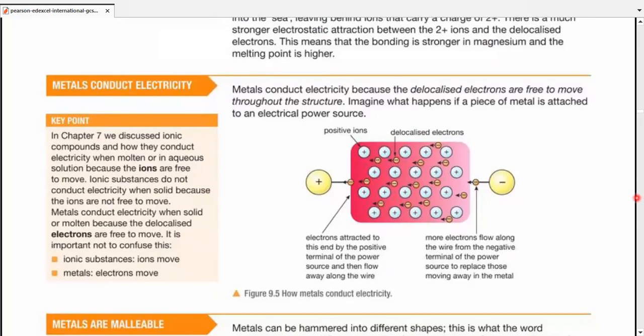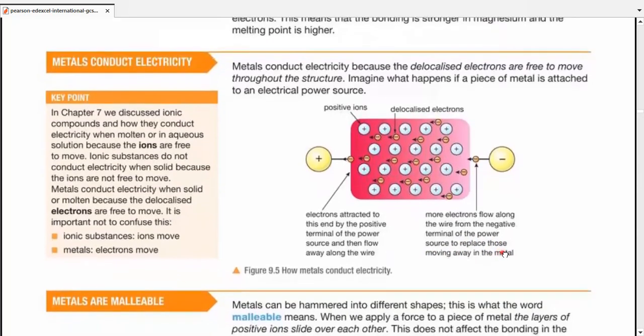Metals conduct electricity. Proving that from the same diagram, metals conduct electricity because the delocalized electrons are free to move throughout the whole structure. Imagine what happens if a piece of metal is attached to an electrical power source. The positive ions, delocalized electrons, and we have attached it to a power source, positive and negative ends of the battery. Electrons attracted to this end by the positive terminal of the power source and then flow away along the wire. More electrons pouring along the wire from negative terminal of the power source to replace those moving away in the metal. So it's a huge exchange of electrons.